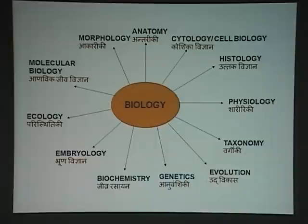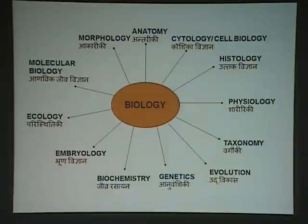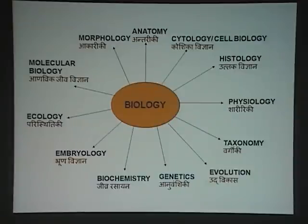All of us are mammals. All of us, if we go to kingdom level, are from the Animalia kingdom. Phylum is Chordata, subphylum is Vertebrata, superclass is Tetrapoda, class is Mammalia, order is Primates, genus is Homo, species is sapiens, and subspecies is sapiens. This is classification.